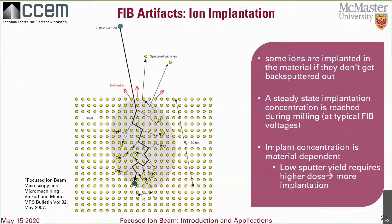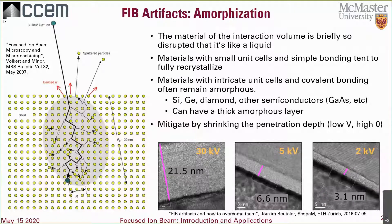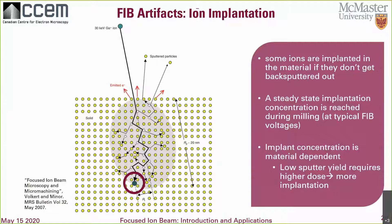Now some damage artifacts from FIB. First, ion implantation — a consequence of high energy ion beams interacting with material. Some ions are implanted and remain in the material if they don't get back sputtered out. During milling, a steady state of ion implantation is reached because as more ions implant, the material continuously disappears due to sputtering. The amount is material dependent and inversely proportional to the sputtering yield — materials that mill slowly require a higher dose and end up with a higher concentration of implanted ions. So in spectroscopy you'd see a higher concentration of gallium in something slow-milling like steel compared to something fast-milling like copper.